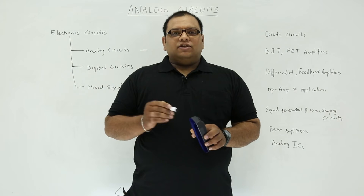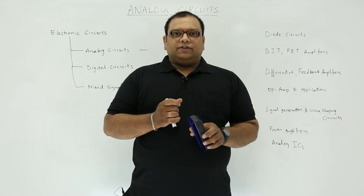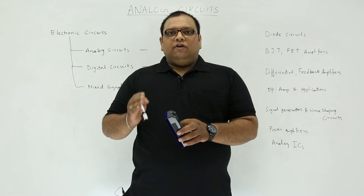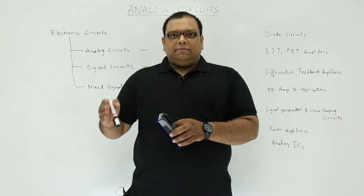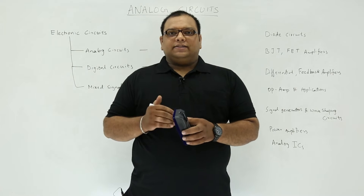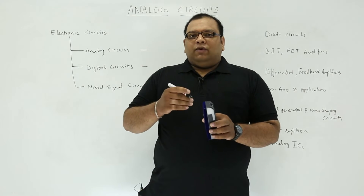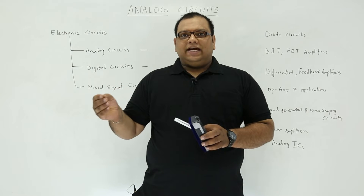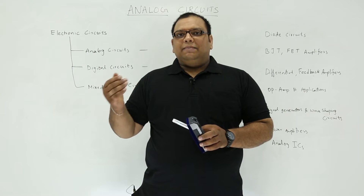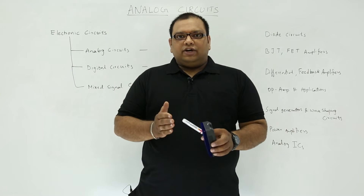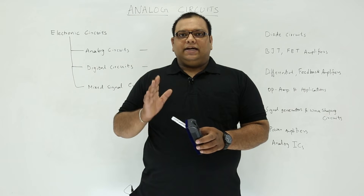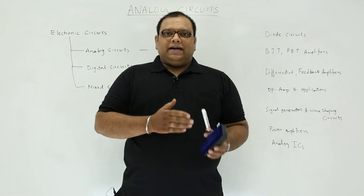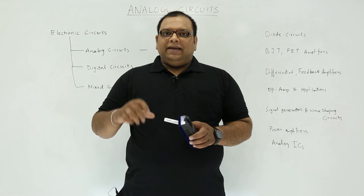Today we are going to discuss about analog circuits. Analog circuit is a type of circuit in electronic circuits. Electronics is a branch dealing with flow of charge carriers in diodes, FETs, and BJTs, which are made of semiconductors. In electrical engineering, we deal with flow of charge carriers in metals — for example, motors and generators. In electronics, we deal with flow of charge carriers in semiconductors, the most common being silicon, which can be n-type or p-type.